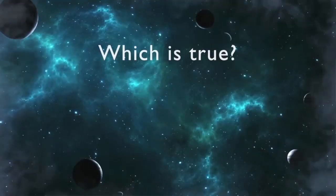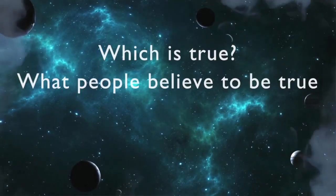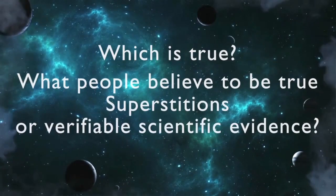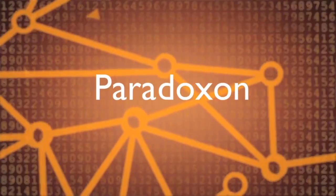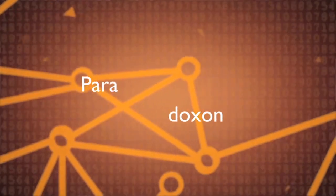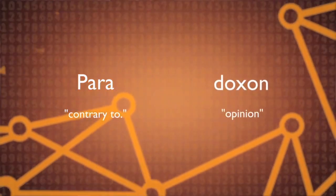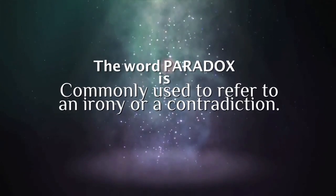Or put another way, which is true — what people believe to be true, their superstitions, or verifiable scientific evidence? The word paradox originated in the 1500s from the word paradoxon: para meaning 'contrary to' and doxa meaning 'opinion.' In our current lexicon, the word paradox is commonly used to refer to an irony or a contradiction. Paradoxes typically come from philosophy, mathematics, or English, but can be found in the creativity of the mind's imagination.